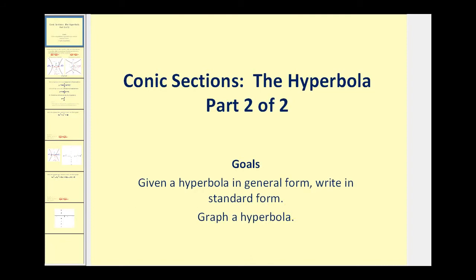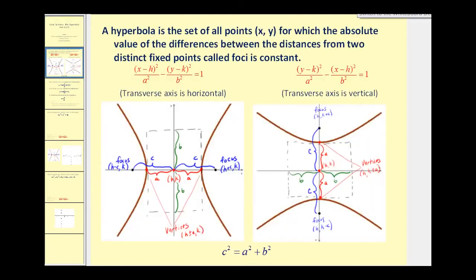Let's do a quick review from the last video. If we have the equation of a hyperbola in standard form and the x part of the equation is the positive part, the hyperbola will have a horizontal transverse axis. If the y part of the equation is the positive part, then the transverse axis will be vertical.